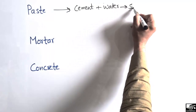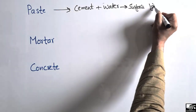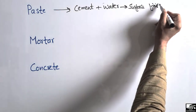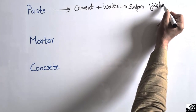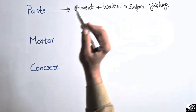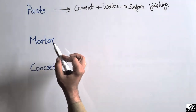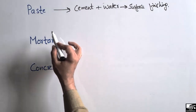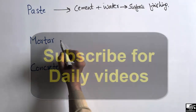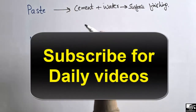Cement paste is mostly used for surface finishing purposes, or we can say plastering. Now, what is mortar? How can we differentiate mortar from paste? In the case of mortar, we just add fine aggregate — or we can call it sand — to the paste.